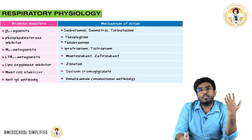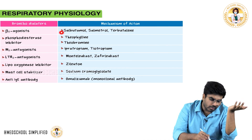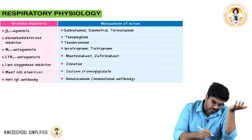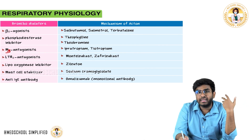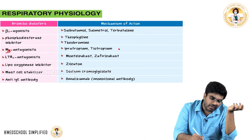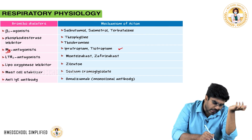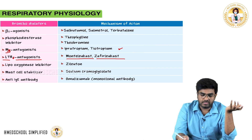In summary, drugs used for asthma treatment include beta-2 agonists, M3 antagonists (ipratropium, tiotropium), and leukotriene receptor antagonists (montelukast, zafirlukast).